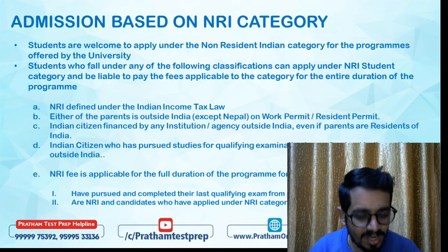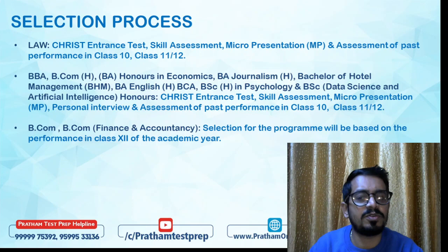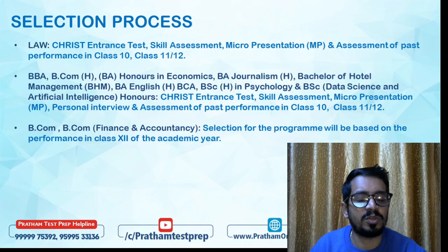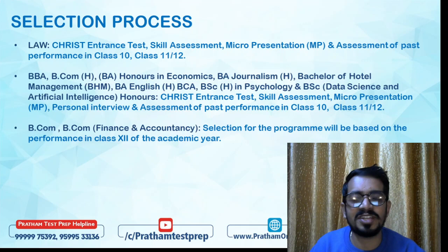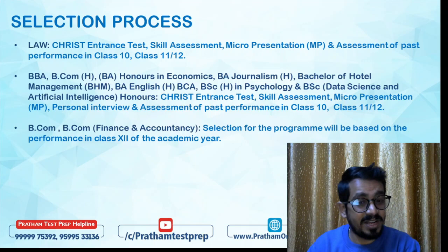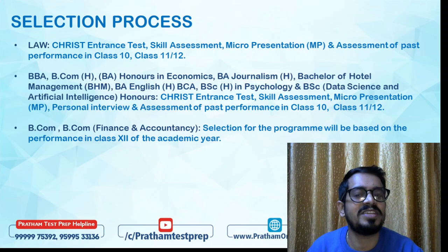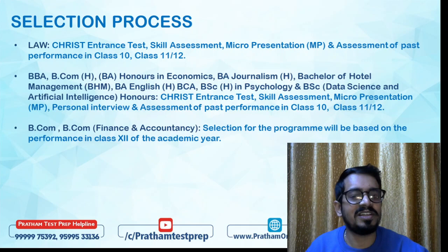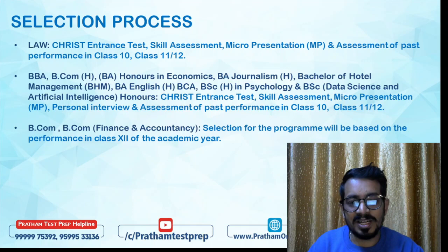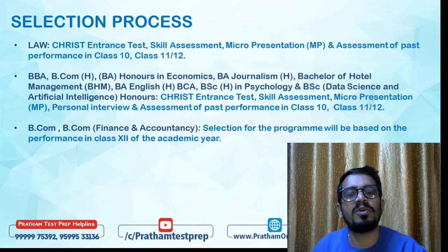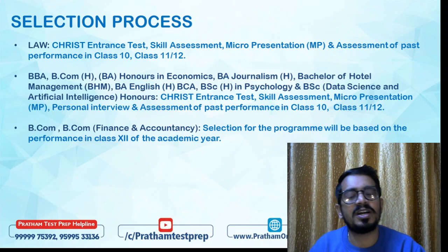Regarding the selection process — for Law, you'll have the Christ Law exam, followed by a skill assessment, micro presentation, and they will consider your 10th and 11th/12th standard marks. For BBA, BCom Honours, Eco Honours, Journalism, Hotel Management, English Honours, BCA, BSc, Psychology, and Data Science, there will be an entrance test, followed by a skill assessment, micro presentation, and interview, with 10th/11th/12th marks also considered.